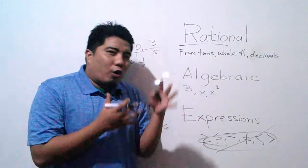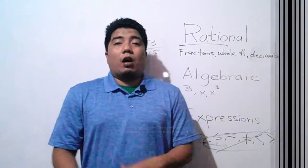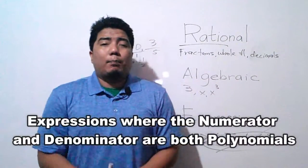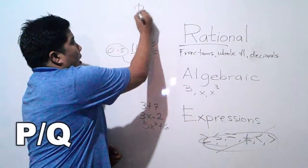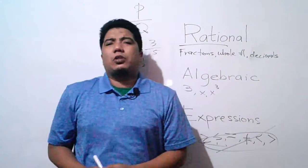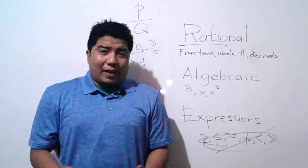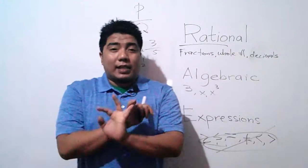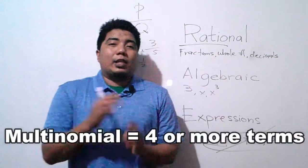By combining all these definitions, rational algebraic expressions are expressions expressed as two quantities where both the numerator and denominator are polynomials. The standard form is P over Q, where P and Q are both polynomials. Polynomials can be classified into four types: monomial (one term), binomial (two terms), trinomial (three terms), and multinomial (four or more terms).